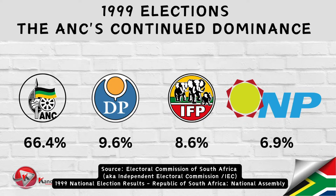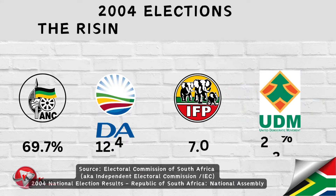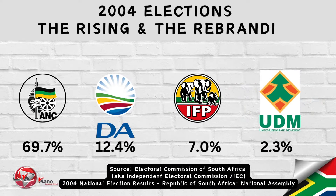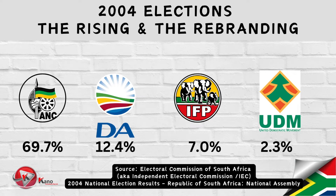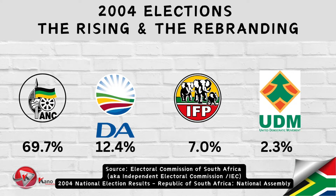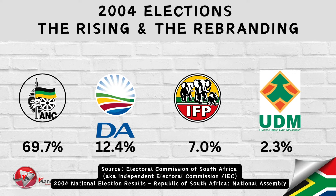We also saw the emergence of new political parties. The 2004 national and provincial elections marked another crucial turning point in South Africa's political landscape. The ANC secured yet another victory, maintaining its position as the governing party, while the newly rebranded Democratic Alliance — the DA — retained its position as the official opposition, followed by the IFP, the UDM, and several other parties.